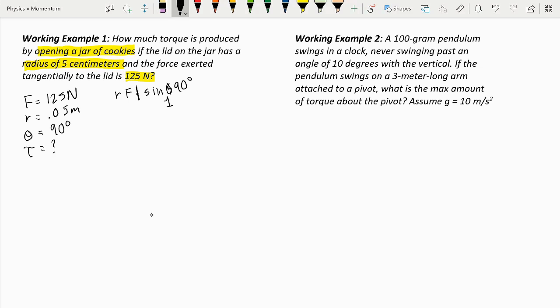So the radius is 0.05 meters, and we multiply that by the force, 125 newtons, and that is 6.25 newton meters.